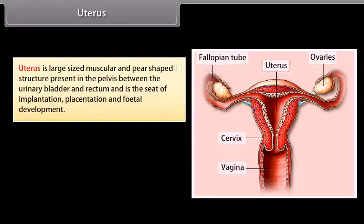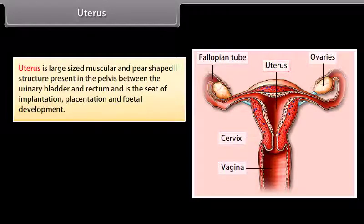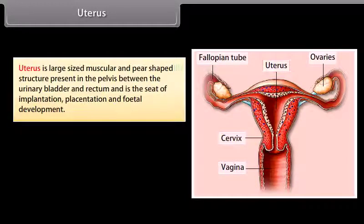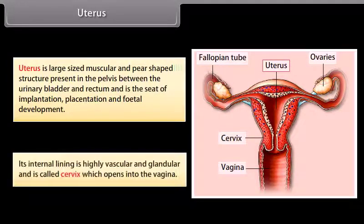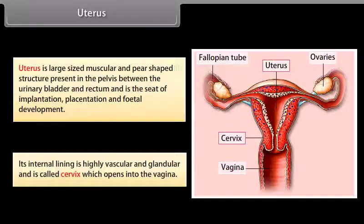The uterus is a large-sized, muscular and pear-shaped structure present in the pelvis between the urinary bladder and rectum. It is the seat of implantation, placentation and fetal development. Its internal lining is highly vascular and glandular. The lower part, called the cervix, opens into the vagina.